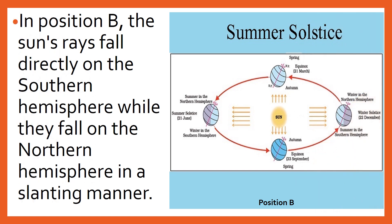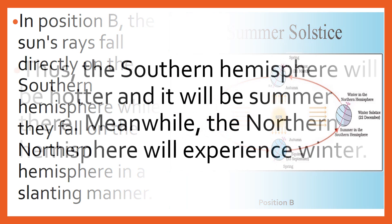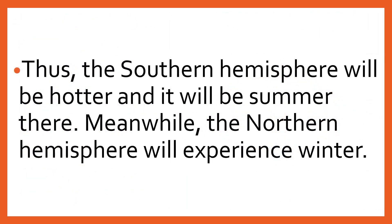Students, in position B, the sun's rays fall directly on the southern hemisphere, while they fall on the northern hemisphere in a slanting manner. Thus, the southern hemisphere will be hotter and it will be summer there, while the northern hemisphere will experience winter.